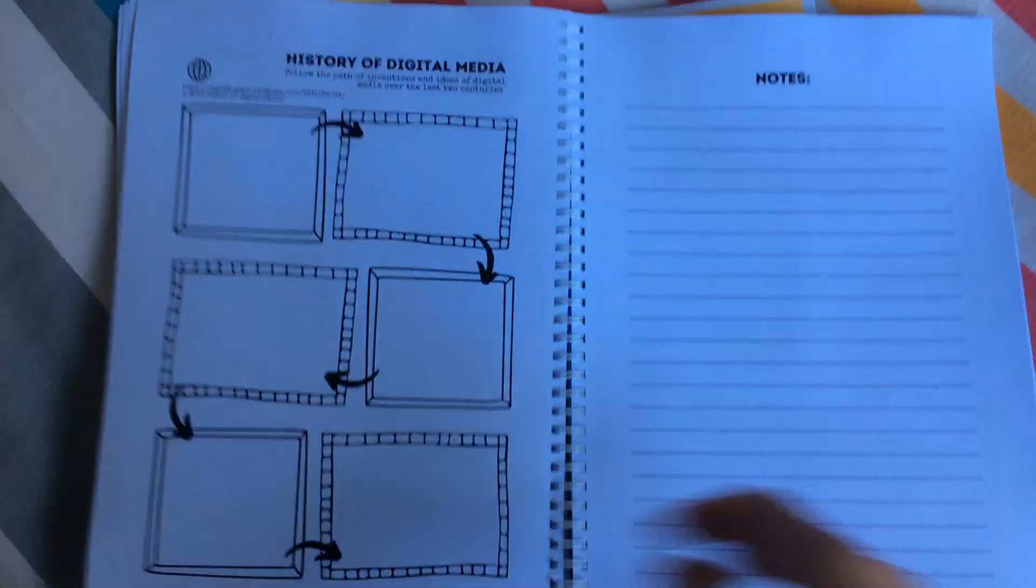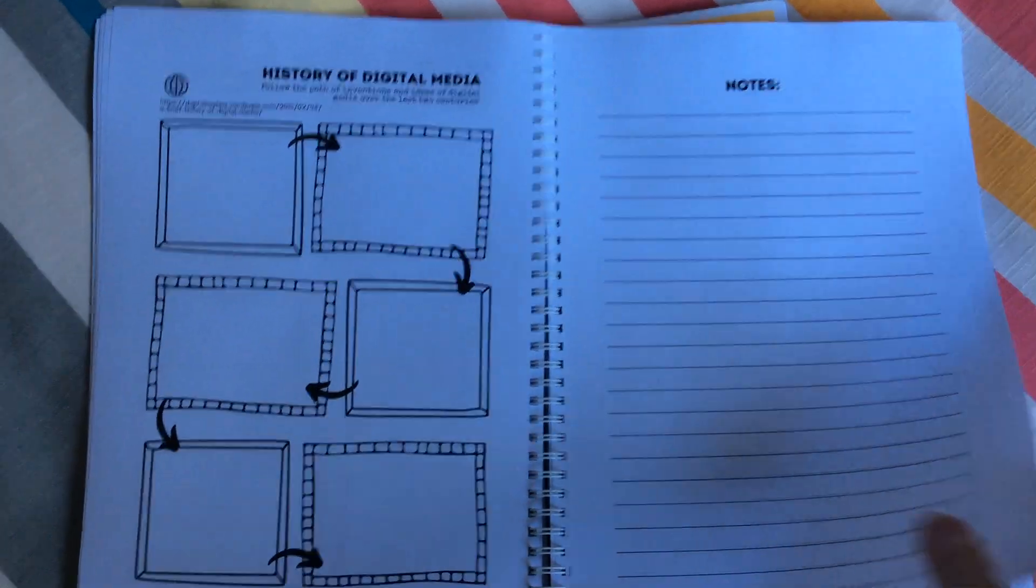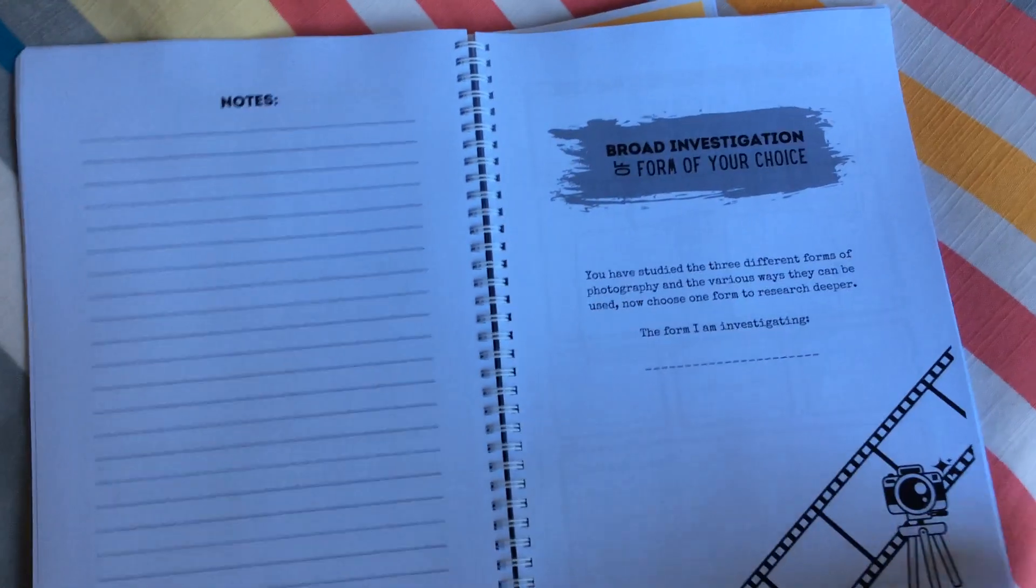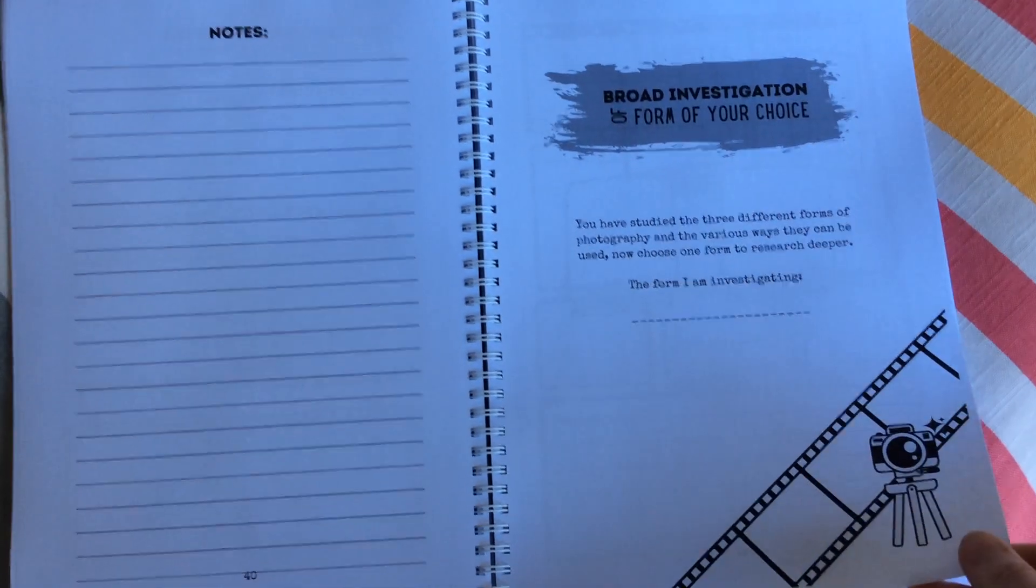Famous people. History of digital media. Again, I have given some links in there. And then of those three forms, choose one that you want to go into deeper.